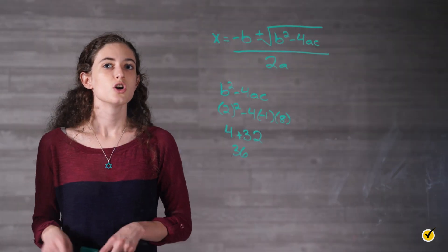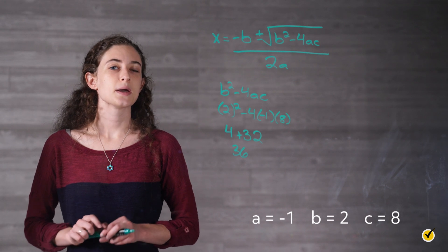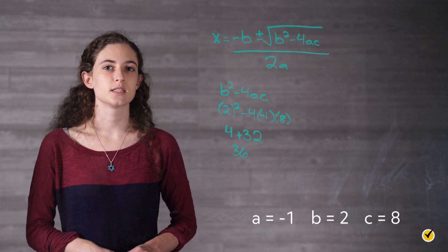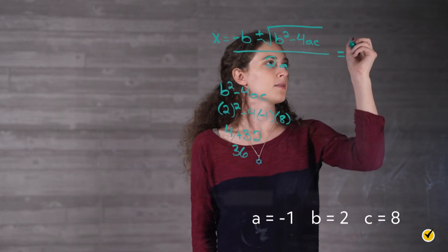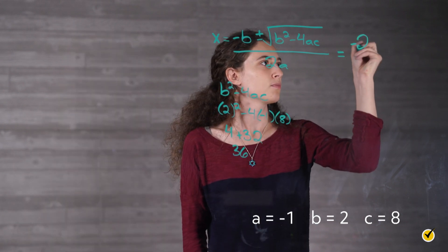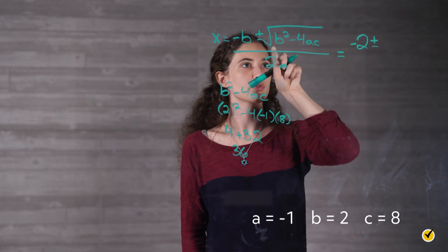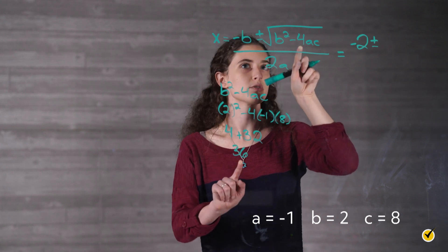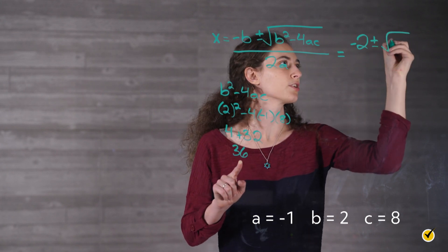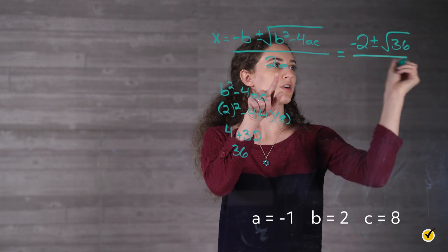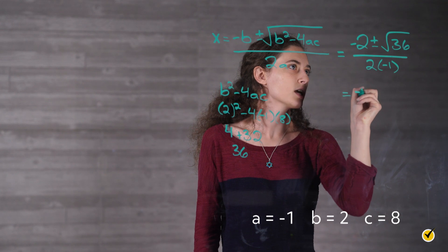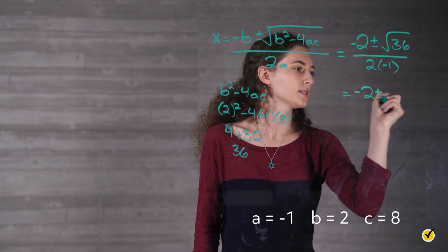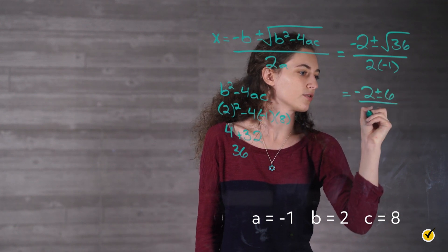Speaking of the quadratic formula, let's try it out. Again, a is equal to negative 1, b is equal to 2, and c is equal to 8. Plus, we already know the discriminant. So we have negative b, which is negative 2, plus or minus the square root of the discriminant, which we found was 36, so the square root of 36, all over 2 times our a, which is negative 1. This is equal to negative 2 plus or minus 6 over negative 2.